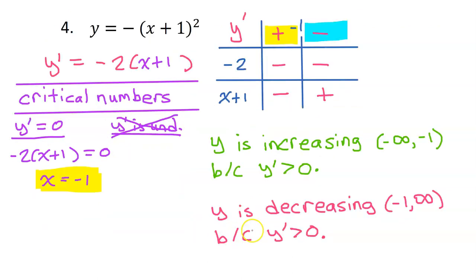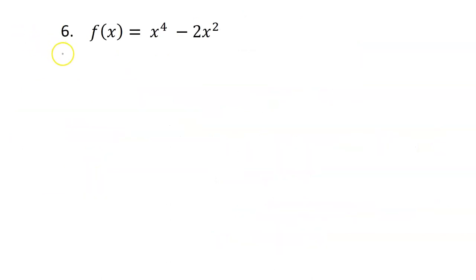We will say y is increasing on the open interval from negative infinity to negative 1, because y prime is positive. And we will say y is decreasing from negative 1 to infinity, because y prime is negative. Go ahead and pause the video and try to do this one on your own.